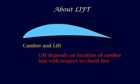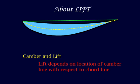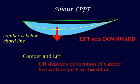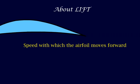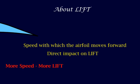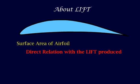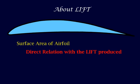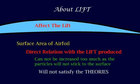The location of the camber line also has an effect on the lift. If the camber line is located above the chord line the lift acts upward. If the camber line is below the chord line the lift acts downward. The speed with which the airfoil moves forward has a direct impact on the lift — more speed means more lift, less speed means less lift. The surface area also has a direct effect on the lift, but it cannot be increased too much as the particles will not stick to the surface and will affect the lift.